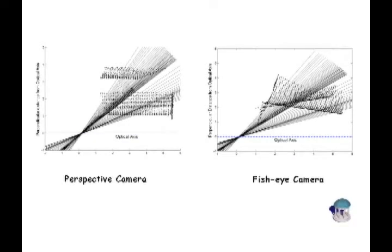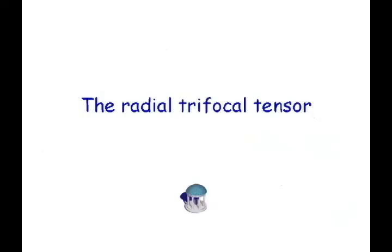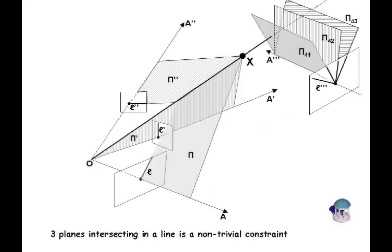Points which are imaged at the same radius are joined by lines. A special degenerate case of the 1D quadrifocal tensor, the radial trifocal tensor, encodes the non-trivial constraint of three planes intersecting in a line in 3D space.